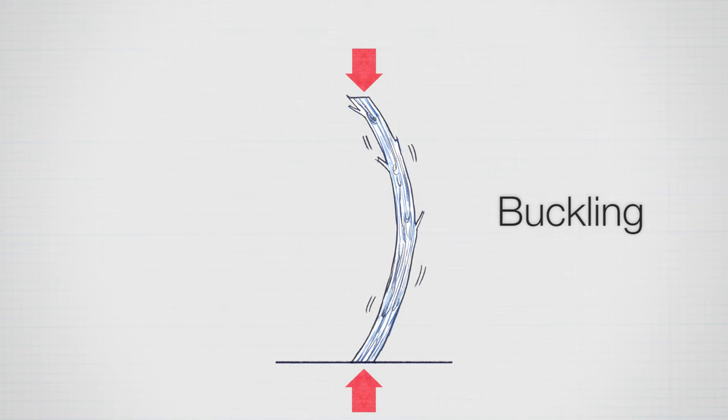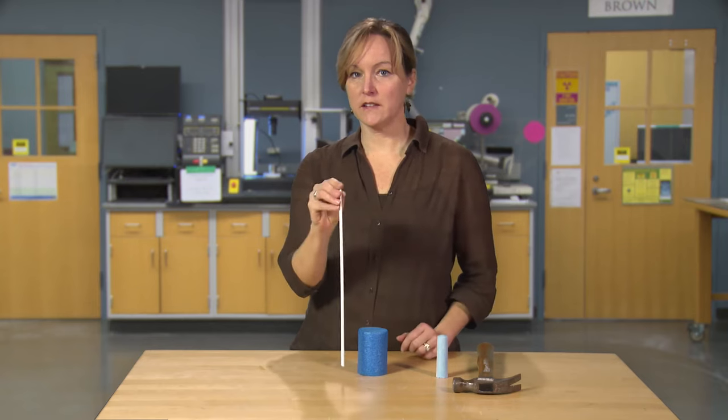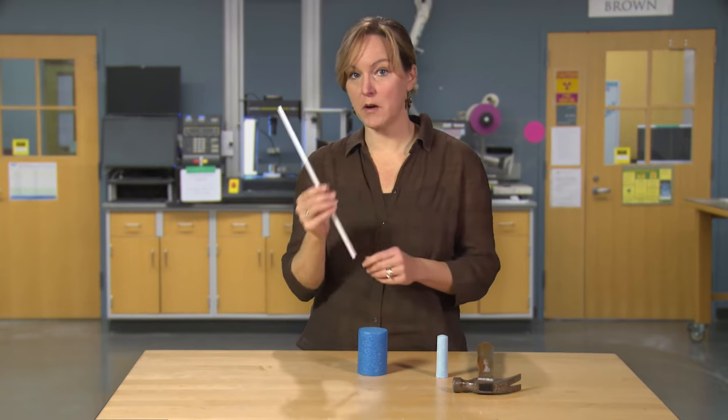They can buckle. Buckling just means it displaces laterally, or horizontally in this case. The middle is displacing. Long, slender columns like this one will tend to buckle.